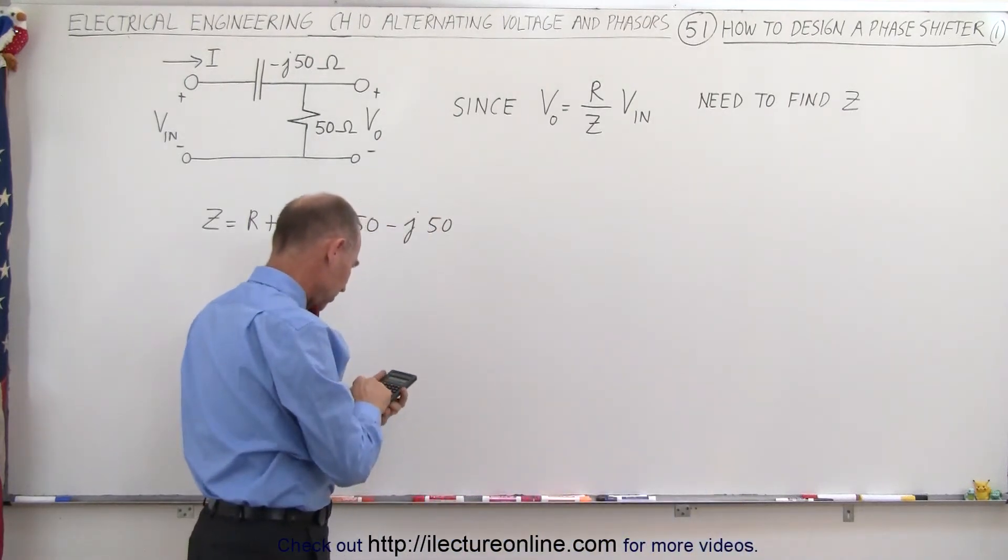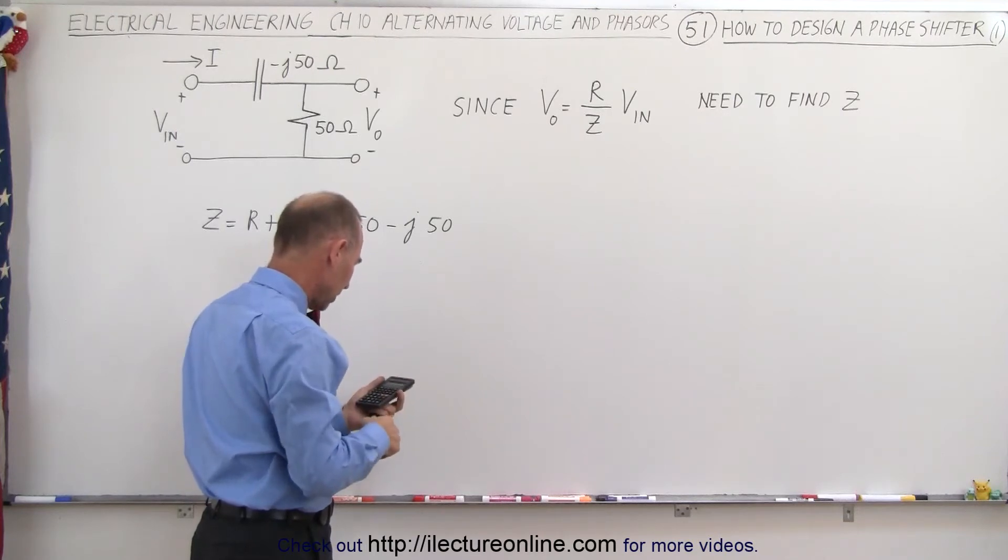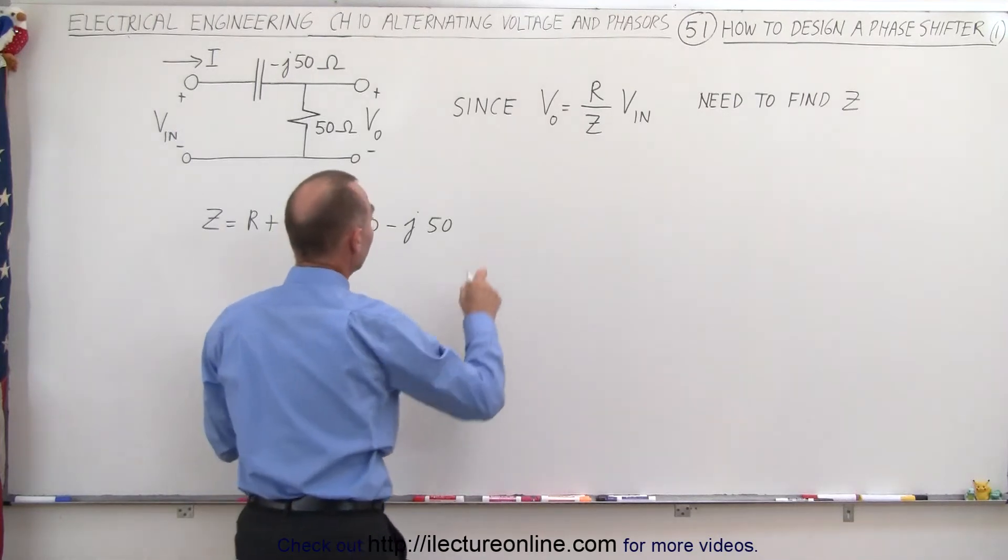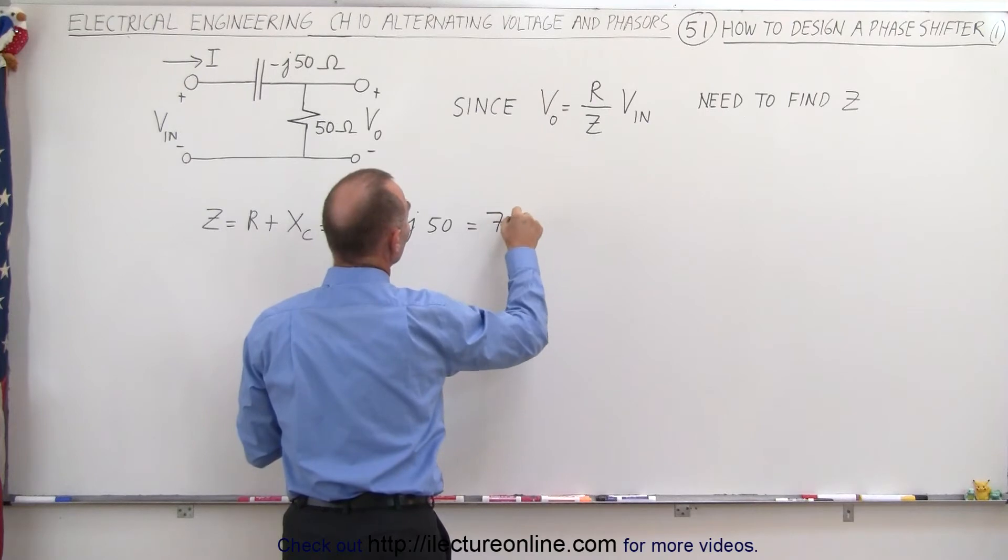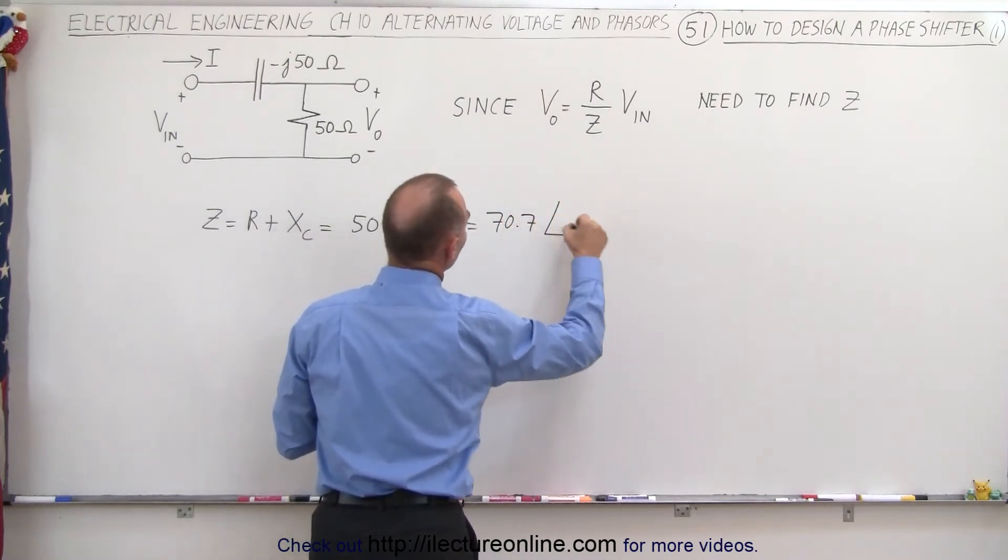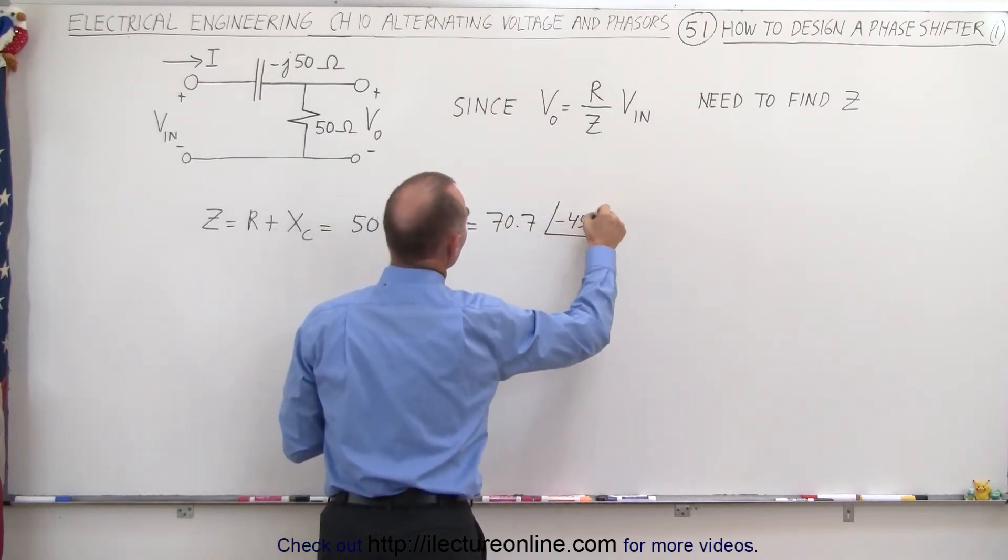That's 50 squared, that's 2500 times 2, take the square root, that would be 70.7. So this would be equal to magnitude of 70.7 with a phase angle of minus 45 degrees.